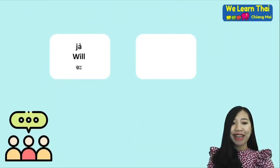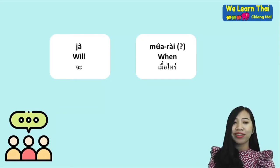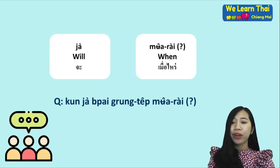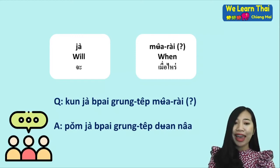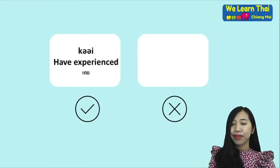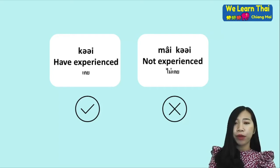The word ja means 'will'. Mưu arai is the question word meaning 'when'. For example: khun ja pai krung thep mưu arai kha? — When will you go to Bangkok? The answer: di chan ja pai krung thep duean na kha — I will go to Bangkok next month.